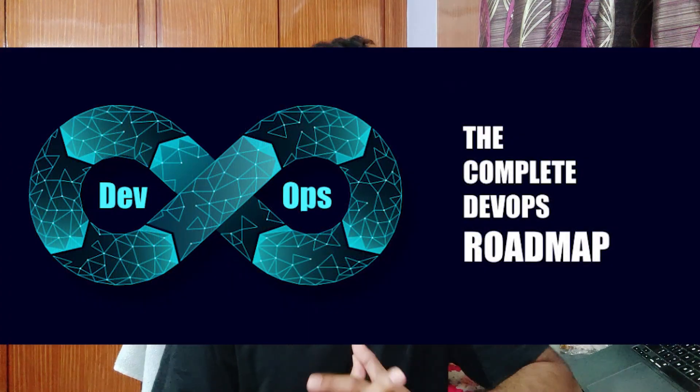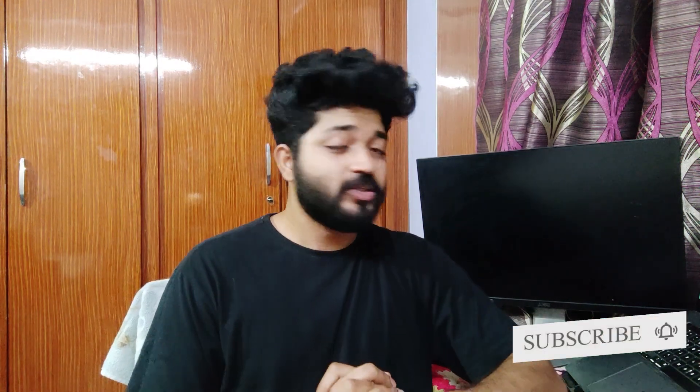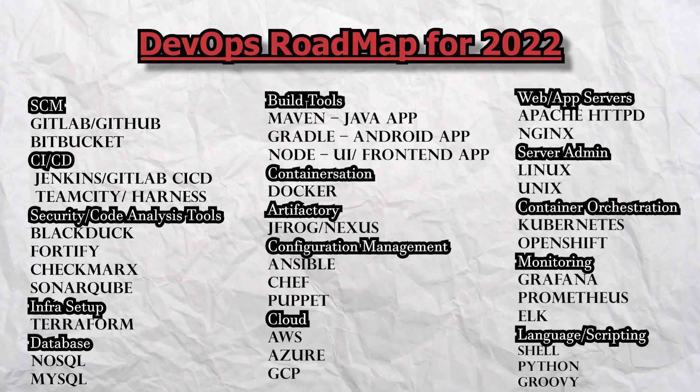This video is very important for you all — it is basically the DevOps roadmap for 2022. This is a proven roadmap where my students have got 25+ LPA in companies like Walmart, Zynga, and Deloitte, and many other organizations. I have divided this roadmap into 15 data points, and each data point will be shown on screen with a set of tools. I'll be recommending the best tool that companies like Amazon, FAANG, and other top product-based companies are using.